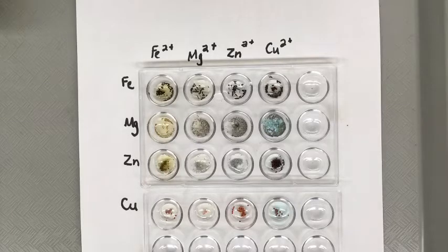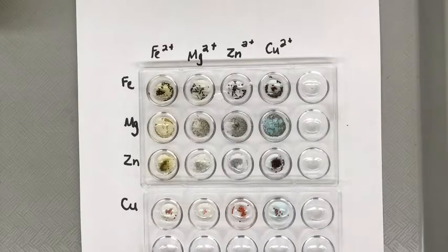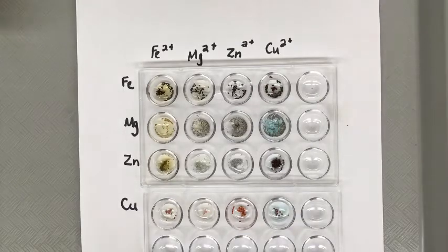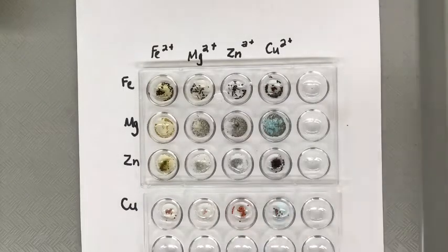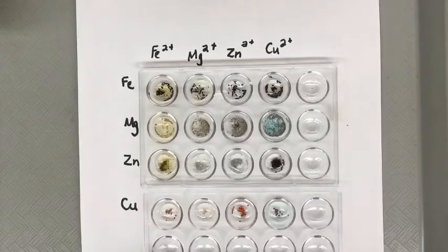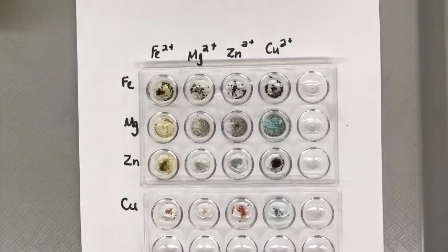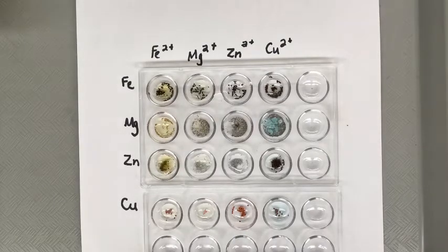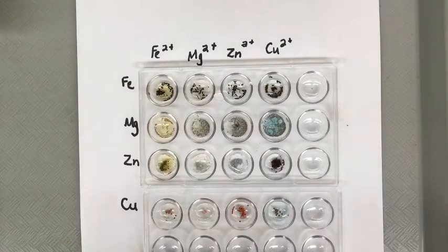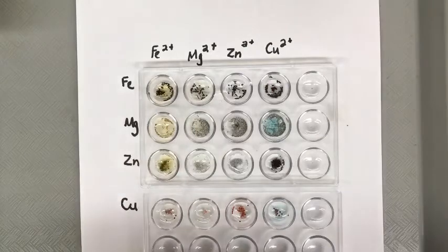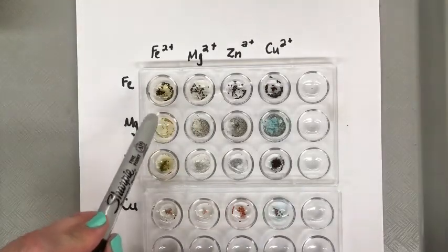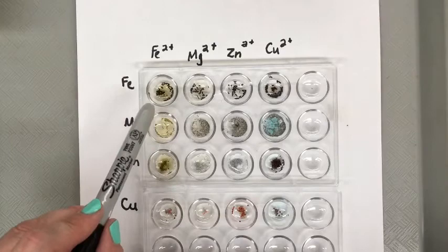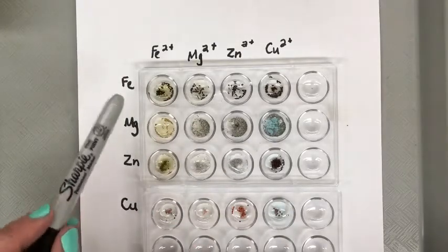In the first column going across iron, we're going to set up the grid just like this and put check marks or X's if there's been a reaction. If we look across iron, there hasn't been a change in this one. There's no color change, no bubbles. It seems the same as before.